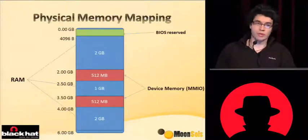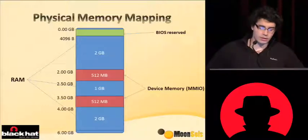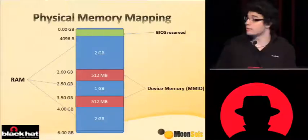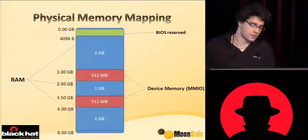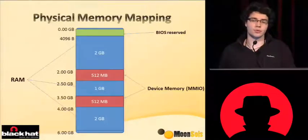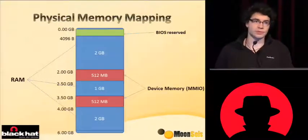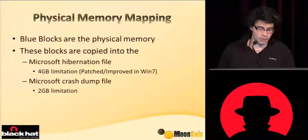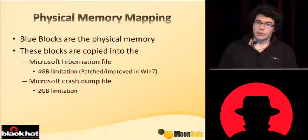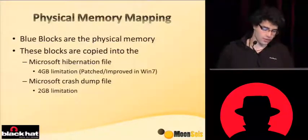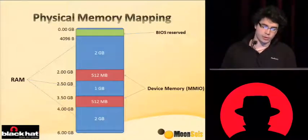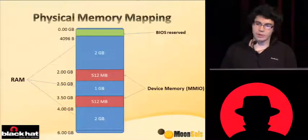So there is a flow chart of the physical address space. In the physical address space, you don't only have the physical memory — you also have the address space used by devices. The physical memory is in fact only the blue blocks. This is what we are really interested in: where the user-land address space of every application and the kernel address space is stored. The blue blocks are what we want, and the red blocks will never be copied because they belong to device memory.